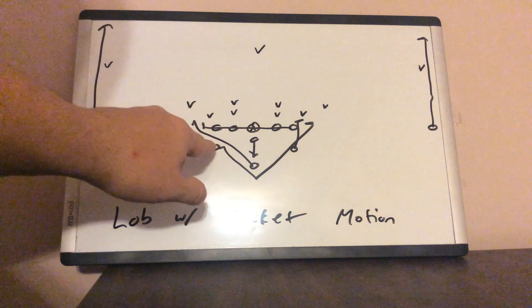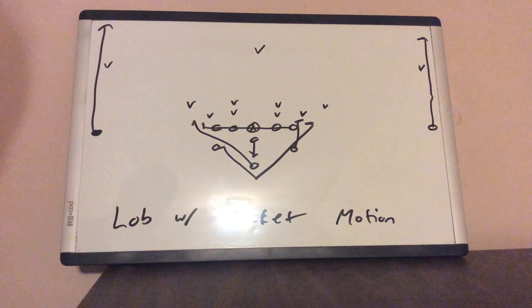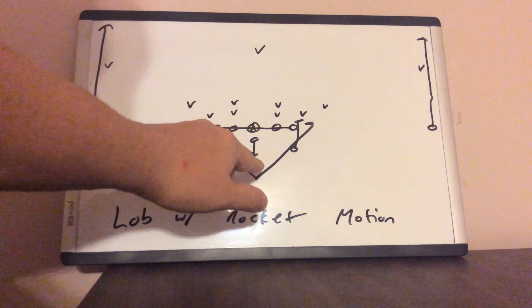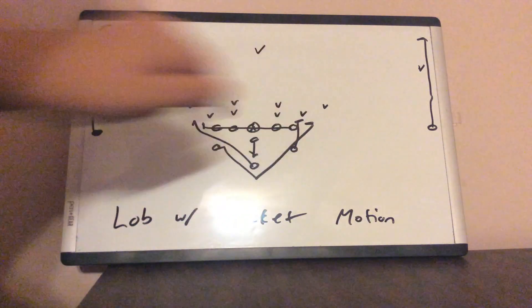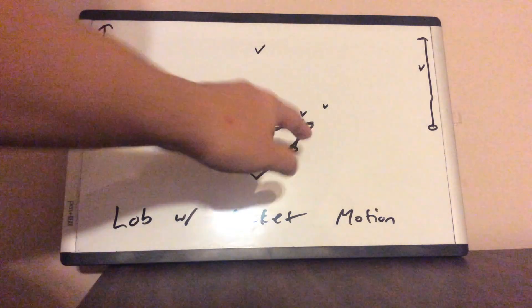The A-back is going to leave on the arm ready. The cadence is down ready, set hut. On the arm ready, he's going to hammer. He's going to take two diagonal steps, and then on the set hut, he's going to turn up and block the first threat off this A-back.